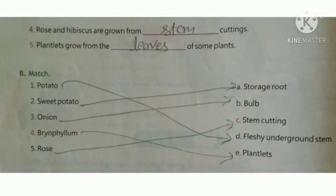Question number B, match. First, potato — fleshy underground stem. Second, sweet potato — storage root. Number 3, onion — bulb. Number 4, bryophyllum — plantlets. Number 5, rose — stem cutting.